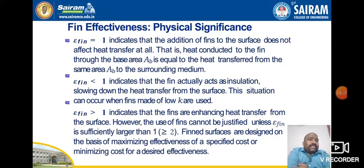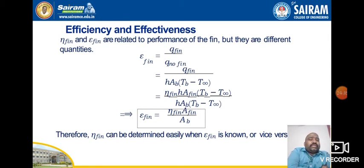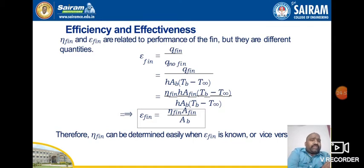Finned surfaces are designed on the basis of maximizing effectiveness for a specified cost, or minimizing cost for a desired effectiveness. There is a relationship between fin efficiency and fin effectiveness: εf = ηf × (Afin / Abase). So if you know the effectiveness, you can find the efficiency, or vice versa.